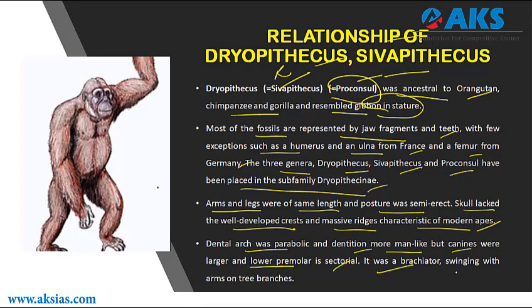Dryopithecus was a brachiator, swinging with arms on tree branches. In the late Miocene, a drying trend in Europe caused replacement of forest and woodland by open shrubland. The upliftment of terrain caused tropical and warmer climate vegetation in central Europe to retreat in favor of mid-latitude and alpine flora. This is probably the reason for the extinction of greater apes in Europe.